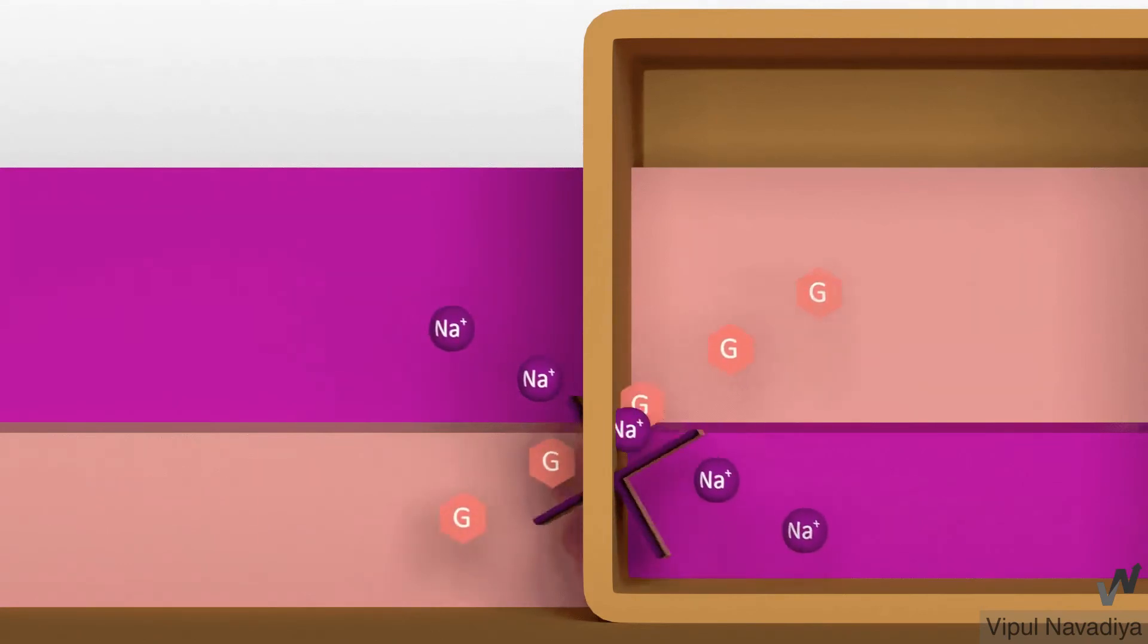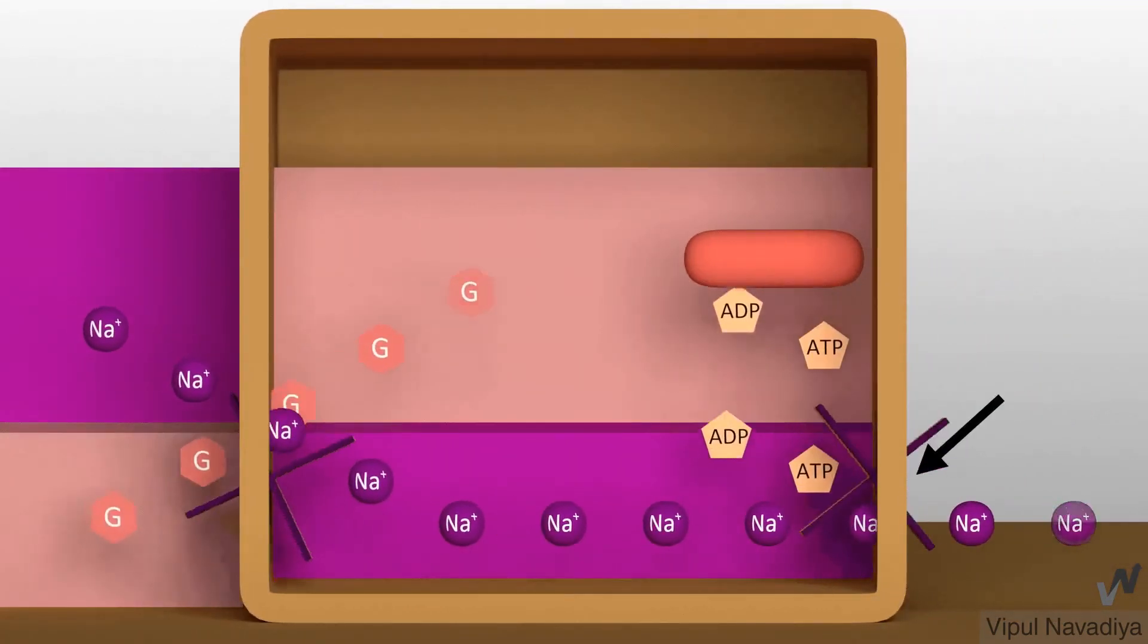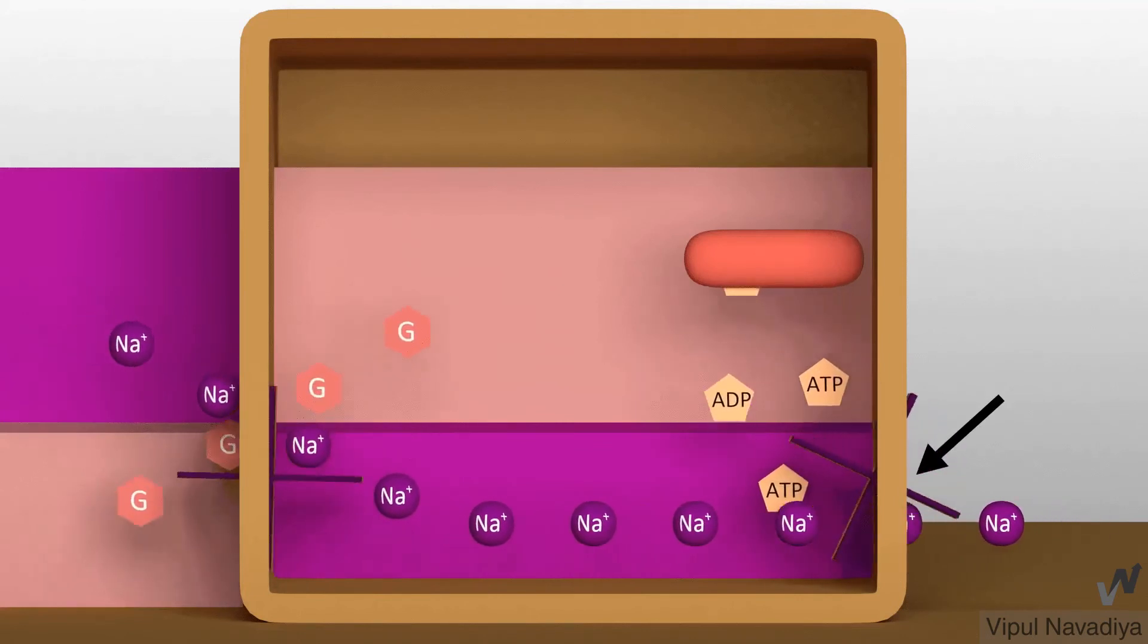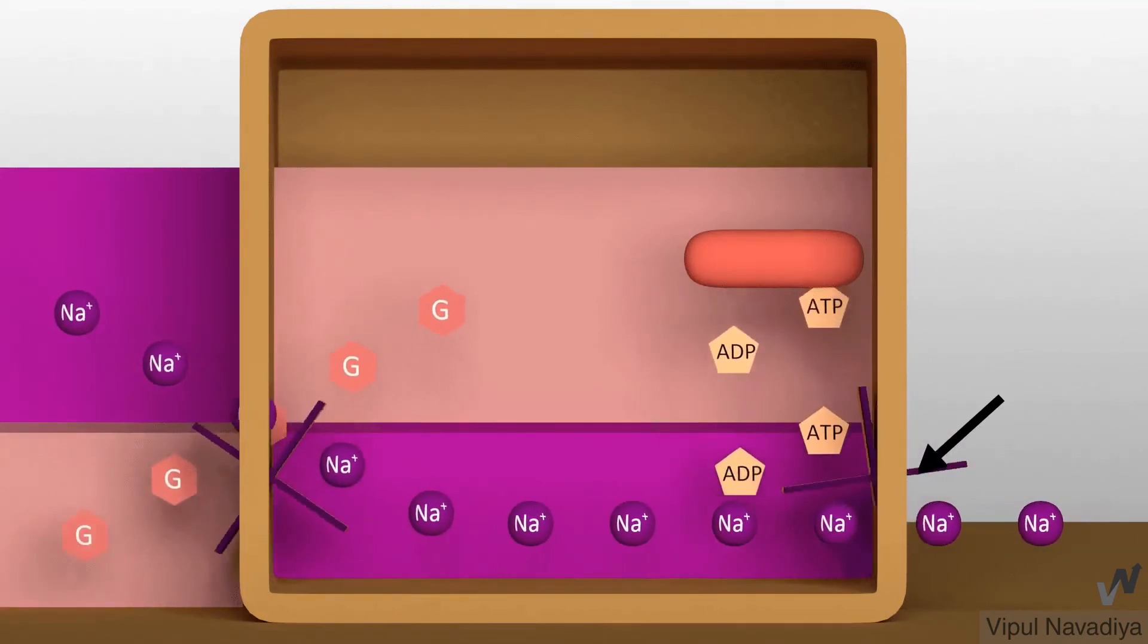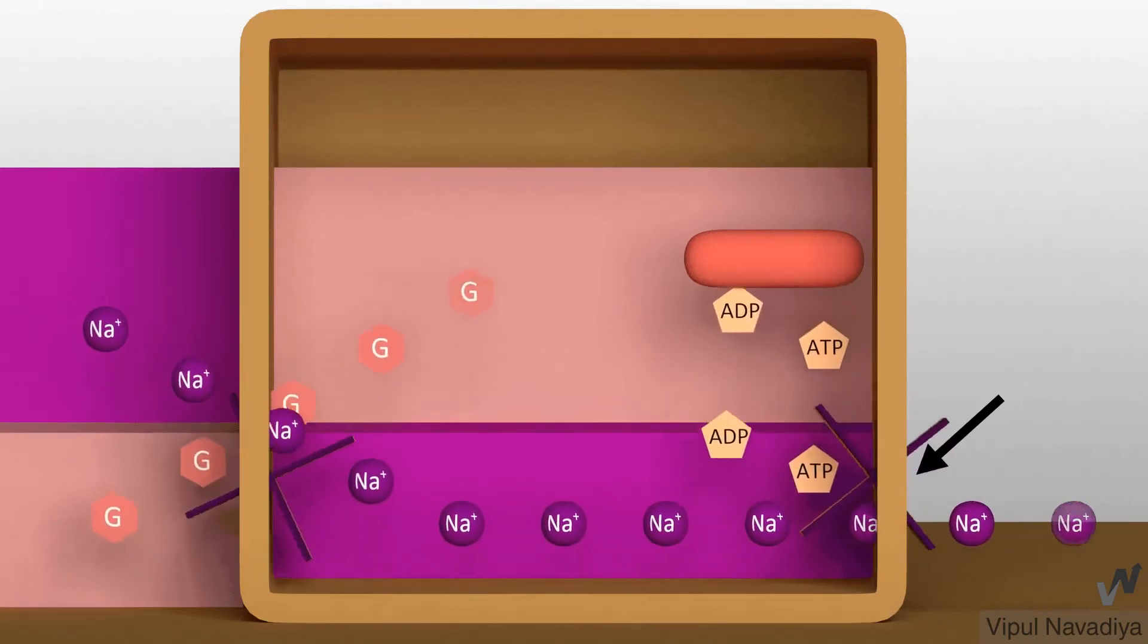This is called secondary active transport of glucose. For such transport to occur, we must have concentration gradient of sodium ions. And this gradient is maintained by sodium potassium ATPase pump which moves sodium outside the cell. Thus, we can say that ultimate source of energy for active transport of glucose is ATP only. And such type of transport is called secondary active transport.